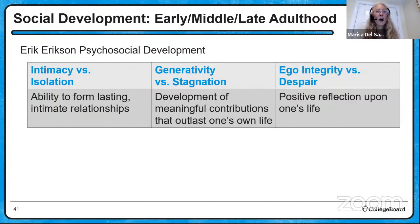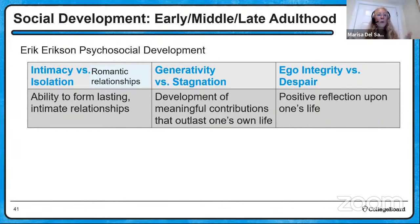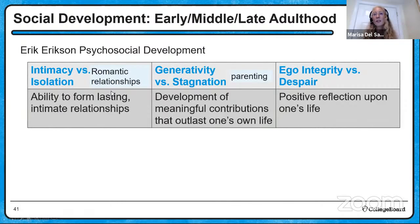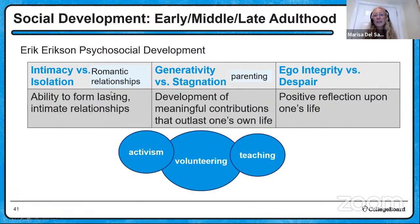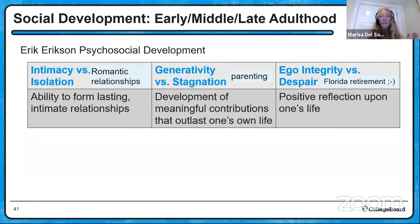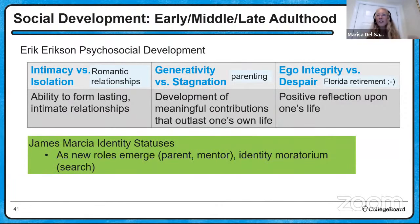Early to middle to late adulthood: Erikson identified three conflicts. Intimacy versus isolation is typically paired with romantic relationships — how well can somebody form those relationships, which has a lot to do with trust. Generativity versus stagnation is largely about parenting and developing a meaningful contribution — being a parent, volunteering, being an activist or teacher to give back to the next generation. Then ego integrity, where people look back on their life and hopefully reflect positively on what they did. Identity statuses may change here too as you take on new identities — being a parent, a spouse, a mentor — so you might find yourself in identity moratorium again.